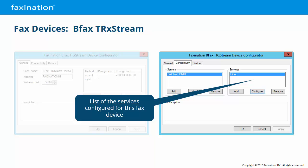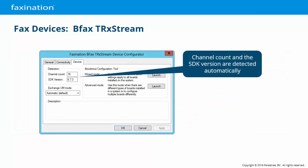If you highlight a service and click Configure, you can modify the configuration of that device. On the Device tab, we can see that the channel count and the Brooktrout SDK version have been detected automatically. If these fields are empty, it means that there is something wrong with the Brooktrout driver or the Boston service. Just run add/remove to reinstall the BFAX TR-Extreme device connector and the Brooktrout drivers, and that should resolve it.